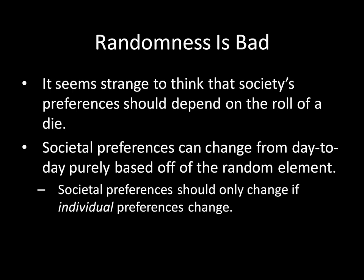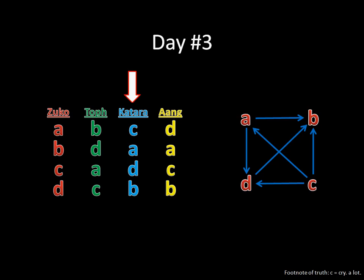Now, that's not to say that societal preferences shouldn't be able to change from day to day. It's just that it shouldn't change from day to day based off of a random element. It should be a deterministic process that's selecting societal preferences. So societal preferences should change if individual preferences change. If, say, Katara were to switch her choice from C being the best to D being the best, then that makes sense for the societal preference to perhaps change based off of that. What doesn't make sense is for societal preferences to change purely because the way that the coin or the die flipped or rolled today was different than the day before. That's strange, and that's something that we're not going to allow.